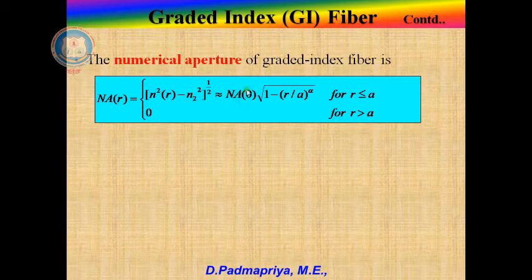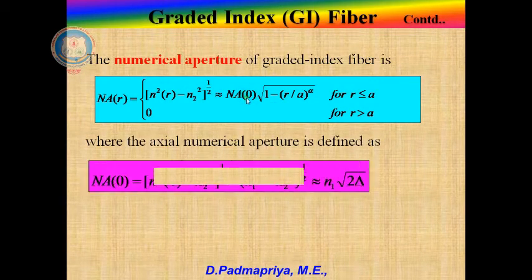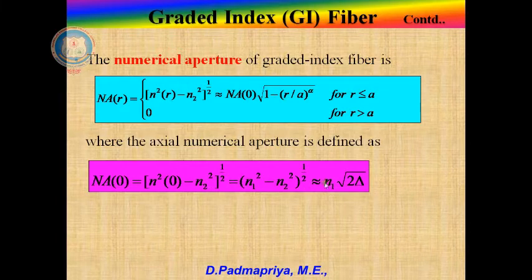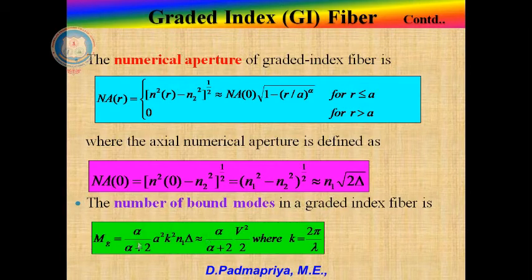The numerical aperture of graded index fiber is not constant as in step index fiber. It is given by NA(r) = [N²(r) − N2²]^(1/2), approximately equivalent to NA(0) × [1 − (r/a)^α] for r ≤ a, and 0 for r > a, where NA(0) is the axial numerical aperture given by [N²(0) − N2²]^(1/2), approximately equal to N1 × √(2Δ), and delta is the index difference. The number of bound modes in graded index fiber is M_g = (α/(α+2)) × (V²/2), where k = 2π/λ.